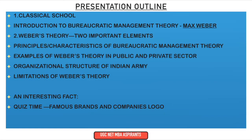Coming to the presentation outline: under classical school, in the previous videos we have seen the scientific management theory by F.W. Taylor and administrative management theory by Henry Fayol. Here we're going to see the introduction to bureaucratic management theory by Max Weber, his two important elements, his six principles or characteristics, some examples in public and private sectors, the organizational structure of Indian army, some limitations of Weber's theory, and a quiz time where famous brands and companies logos are discussed.